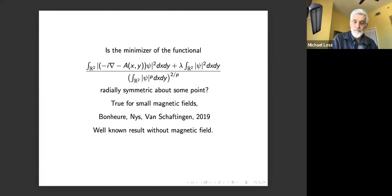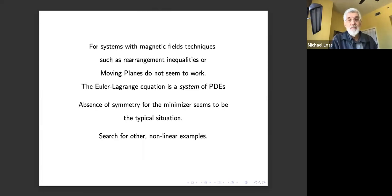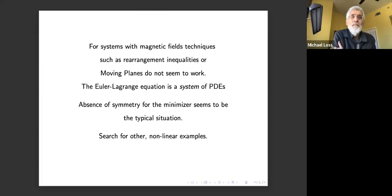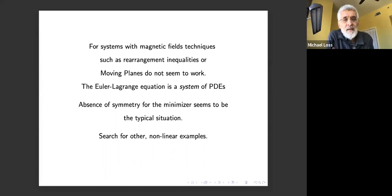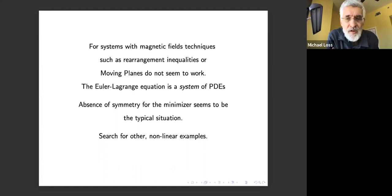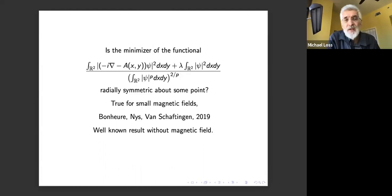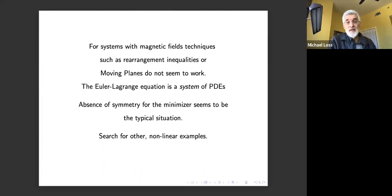I would very much like to solve such a problem but cannot. Standard techniques — rearrangements, moving planes — don't seem to work, because the Euler–Lagrange equations are a system of PDEs rather than a single PDE. Also, absence of symmetry of minimizers is often typical. But for these problems I strongly expect symmetry holds, and for very small magnetic fields it does.